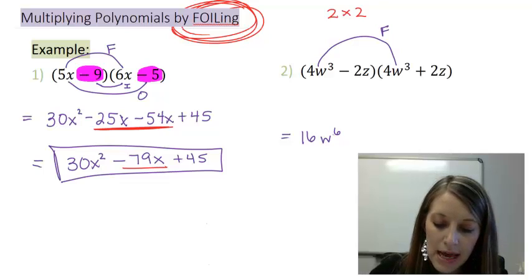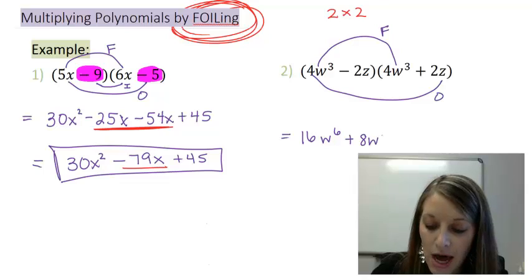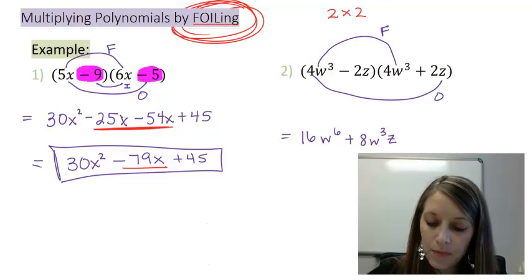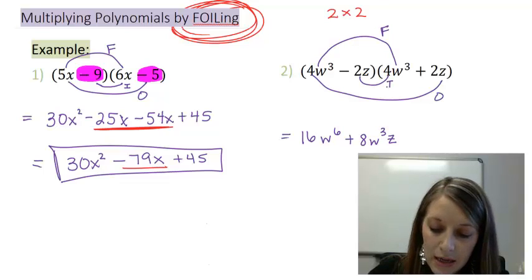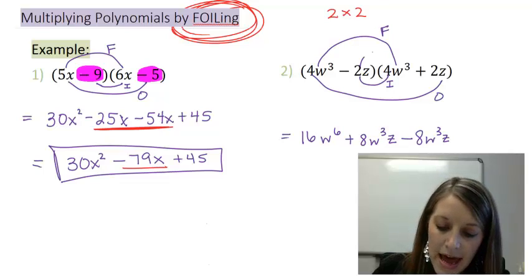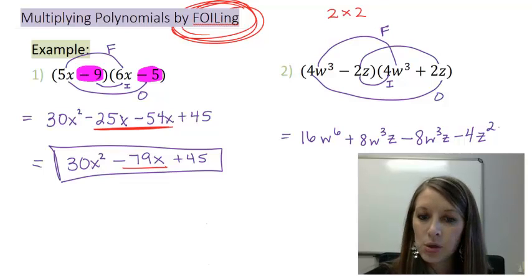4w cubed times 4w cubed gives me 16w to the sixth. I multiply the numbers and add the exponents. On the outside, I have 4 times 2 gives me 8w cubed times z. Those are not like variables, so I just need to copy down what I have, which is a w cubed and a z. Inside gives me a negative 8w cubed and a z. And then last, negative 2 times negative 2 gives me negative 4. And z times z gives me a z squared.